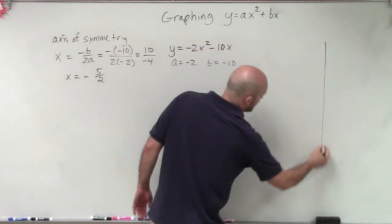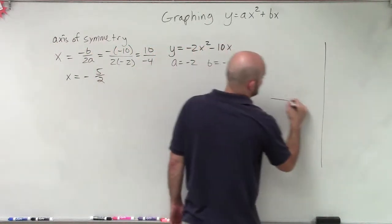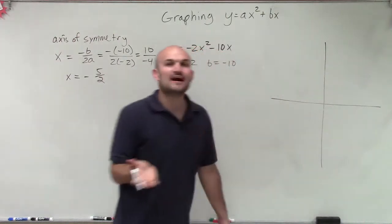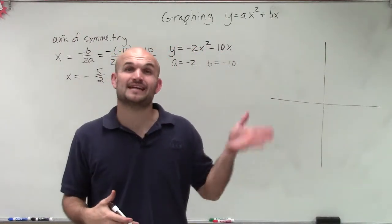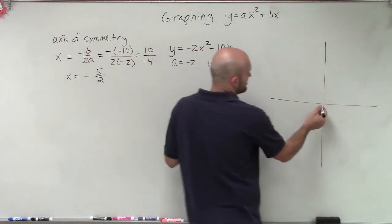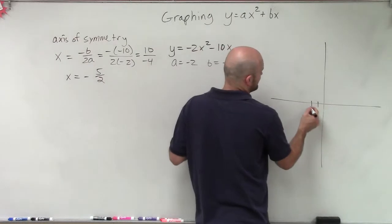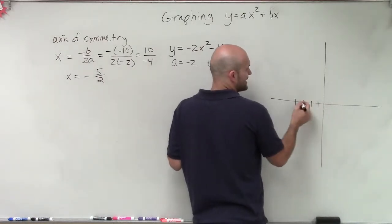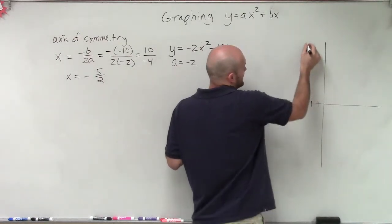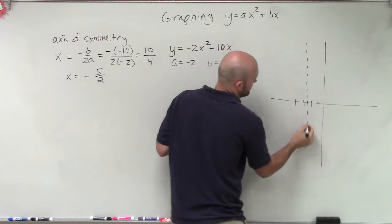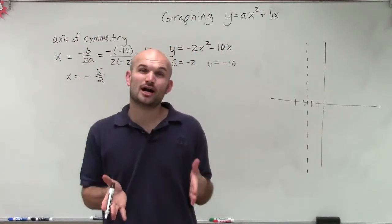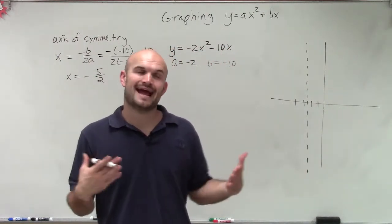Now that we know the axis of symmetry, I'm going to plot that on a coordinate grid. Negative 5 halves in decimal form is negative 2.5, so it's going to be between negative 2 and negative 3. We'll make a nice dotted line, and remember this axis of symmetry is what's going to cut our parabola in half.